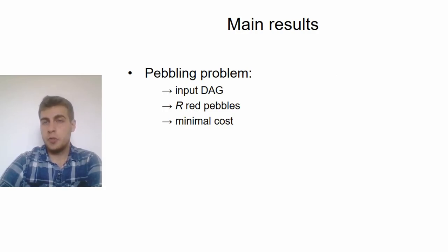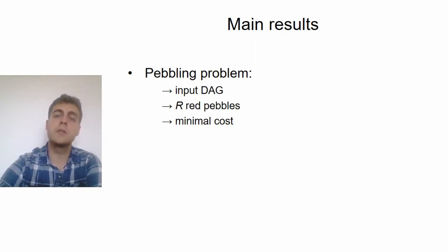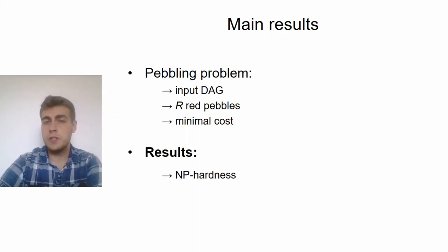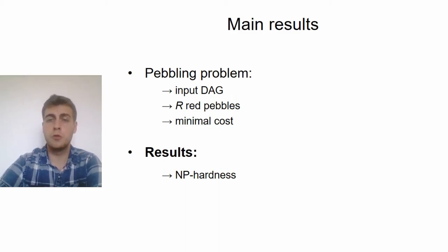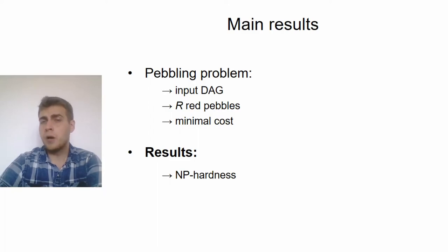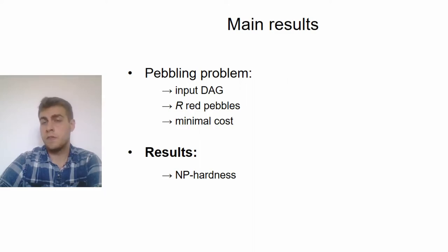So in the general setting, we have an input DAG and a fixed amount of red pebbles available, and our goal is to find the pebbling that pebbles this DAG with the minimal possible cost. And as for our results, we first show that this problem is NP-hard in all of these models. We point out that the NP-hardness of red-blue pebbling has already been shown before in some of the models, but we still include this proof because it's much simpler than the previous proof and easier to carry over to the remaining models.